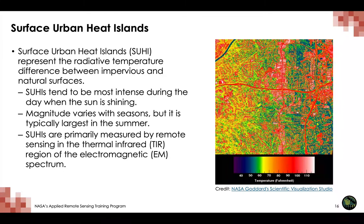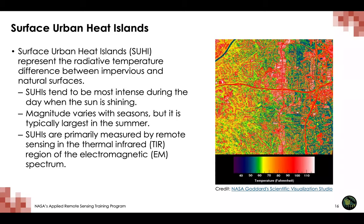Surface urban heat islands represent the radiative temperature difference between impervious and natural surfaces. They are present at all times of the day and night, but are most intense during the day when the sun is shining. The magnitude of surface urban heat islands varies with seasons due to changes in the sun's intensity, as well as ground cover and weather. As a result, surface urban heat islands are typically largest in the summer. They are primarily measured through remote sensing.